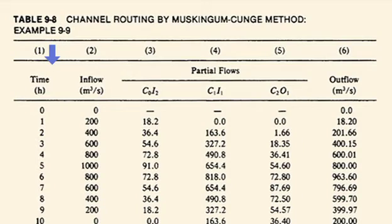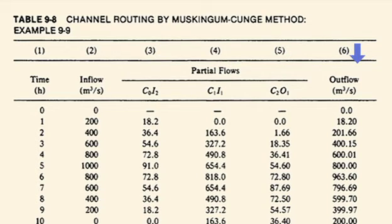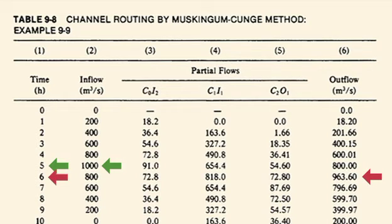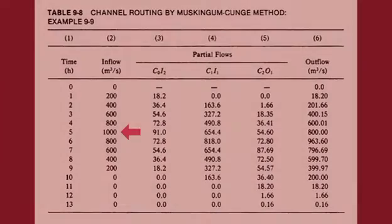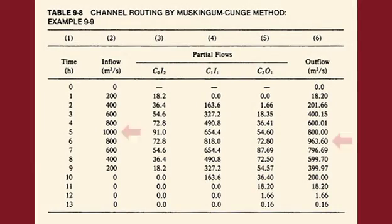Column 1 shows the time in hours. Column 2 shows the inflow hydrograph. Columns 3 to 5 show the weighted flows. Column 6 shows the outflow hydrograph. The peak inflow is 1000 cubic meters per second at time equal to 5 hours, while the peak outflow is 963.6 cubic meters per second at time equal to 6 hours. The flood peak has attenuated about 3%, and the time base has increased to 13 hours.